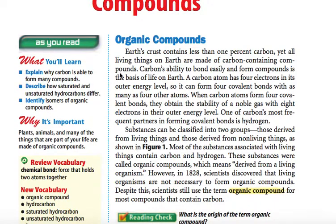Earth's crust contains less than 1% carbon, yet all living things on Earth are made of carbon-containing compounds. Carbon's ability to bond easily and form compounds is the basis of life on Earth. A carbon atom has 4 electrons in its outer energy level, so it can form 4 covalent bonds with as many as 4 other atoms. When carbon atoms form 4 covalent bonds, they obtain the stability of a noble gas, with 8 electrons in their outer energy level. One of carbon's most frequent partners in forming covalent bonds is hydrogen.